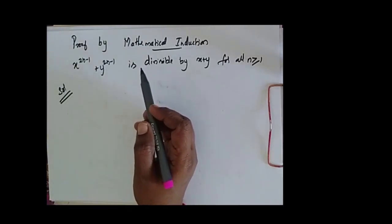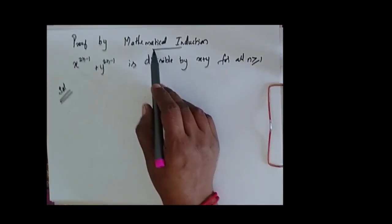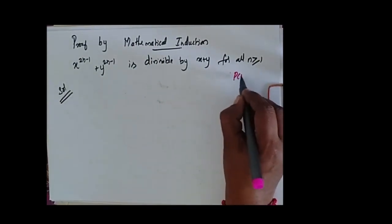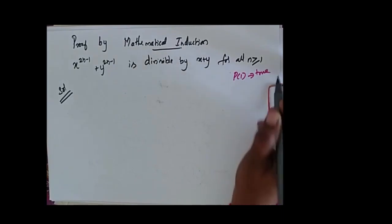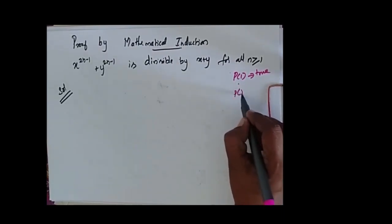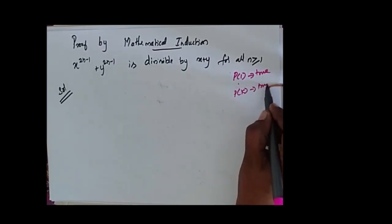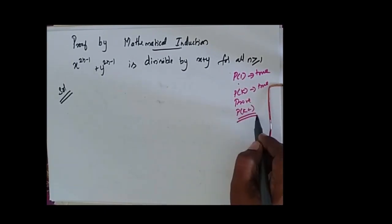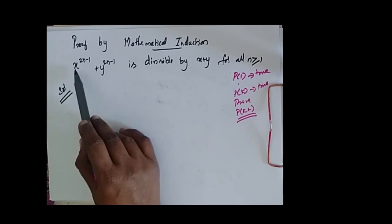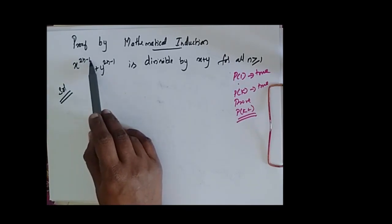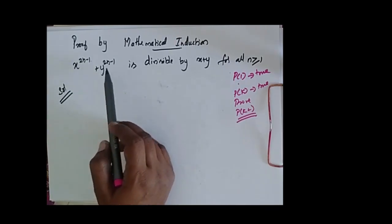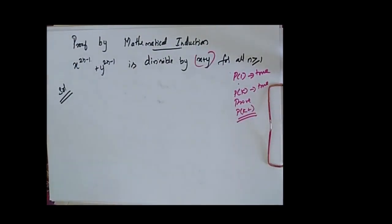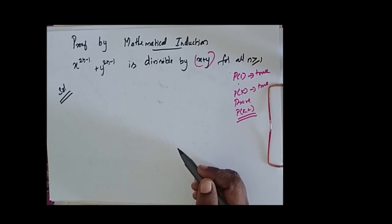Proof by mathematical induction. Whenever I am saying that I am going to prove by mathematical induction, I have to prove for P of 1 which is true. Then from this I say that for P of k it is true, then I have to prove for P of k plus 1. So now I have the problem: x power 2n minus 1 plus y power 2n minus 1 is divisible by x plus y, for all n greater than or equal to 1.